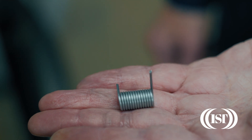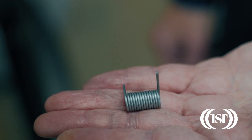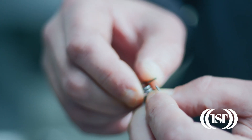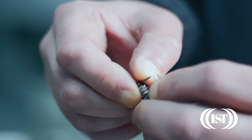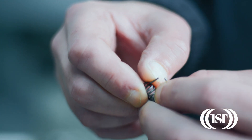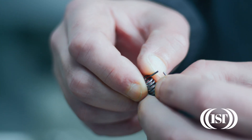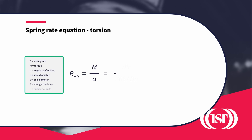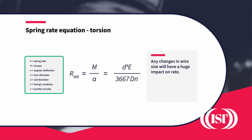The rate or stiffness of a torsion spring is the torque needed to give a certain angular deflection, or the change in torque needed for an additional unit of deflection. This is the equation that calculates spring rate. You can see that because it includes wire diameter raised to the power 4, any changes in wire size will have a huge impact on rate.